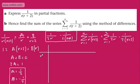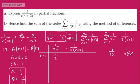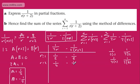When r equals 1, we get 1 over 2(1) which is 1/2, subtracting 1 over 2(3) which is 1/6. When r equals 2, we get 1 over 2(2) which is 1/4, minus 1 over 2(4) which is minus 1/8. And you can hopefully see a pattern emerging with these terms.